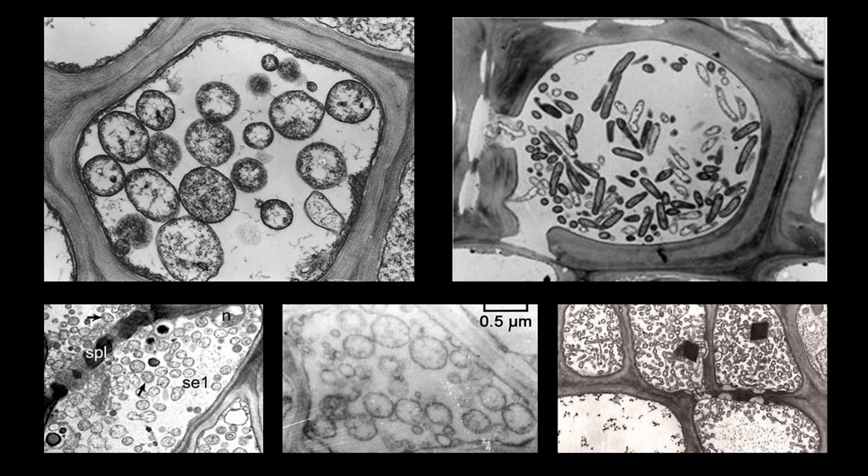Phytoplasmas are bacteria. They were initially thought to be viruses based on the symptoms which appeared on plants — those symptoms resembled virus-caused disease. Later it was discovered they are in fact bacteria. The first sighting of phytoplasmas was in 1967, but they were formally described only in 2004, so they are quite recent organisms.